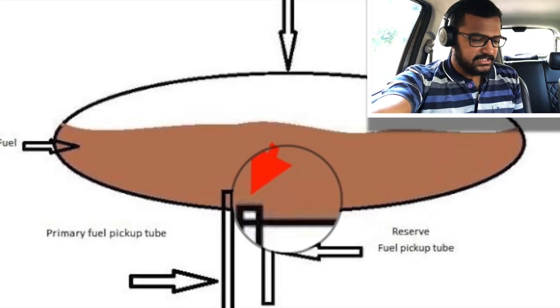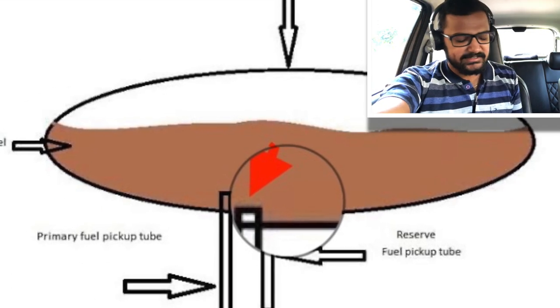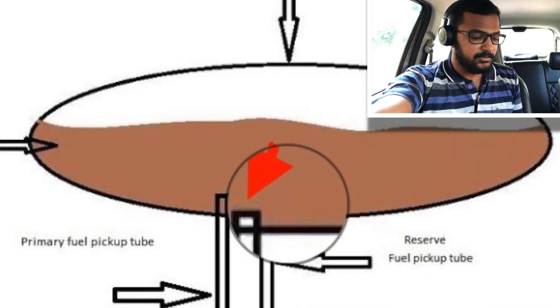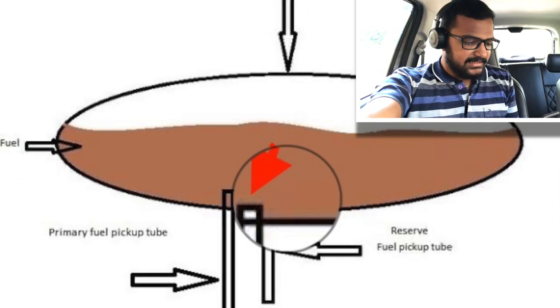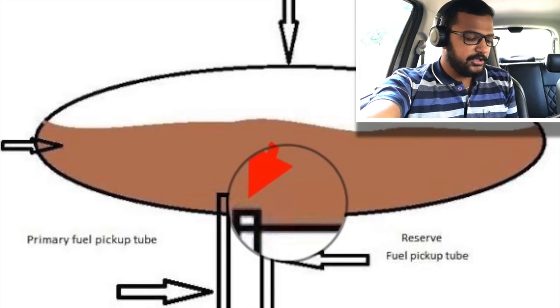When the main supply runs dry, you switch to reserve. You can then fill your fuel and it takes place in the main tube. The fuel level is low and temperature is a factor — that's why there is a reservation system. Please like, share, and subscribe. Thank you.